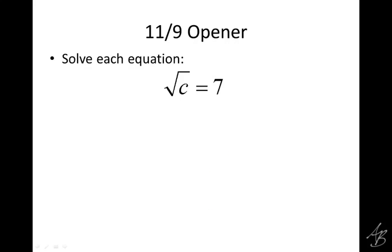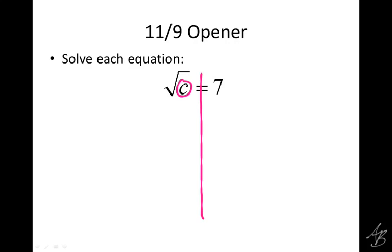This next one is a little trickier. We're looking for a number we can replace c with so the equation is true. The square root of some number is going to give us 7. What do we take the square root of to get 7? We would take the square root of 49 to get 7. So we need to get rid of the square root to get c by itself. The opposite of a square root is squaring, so if I want to get rid of the square root, I can square it.